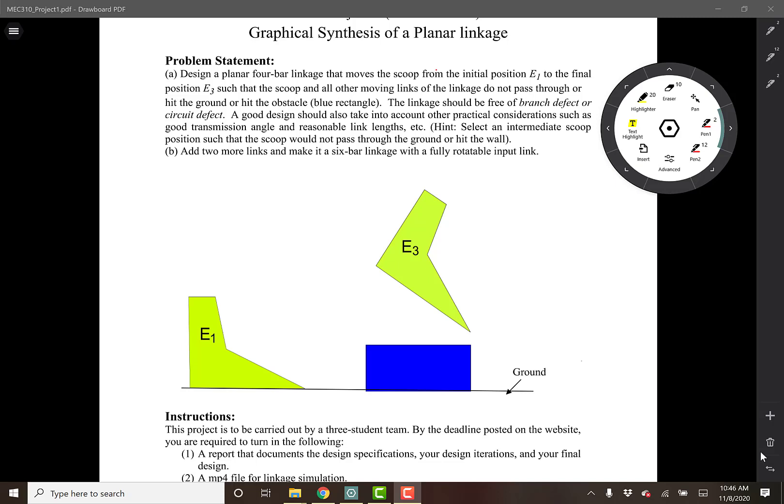In this video, I will talk about the assigned class project. The purpose of this project is to do graphical synthesis of a planar linkage. At the end of the day, we will obtain a 6-bar planar linkage that will move the scoop from the pose E1 to the position E3. This is accomplished in two steps.